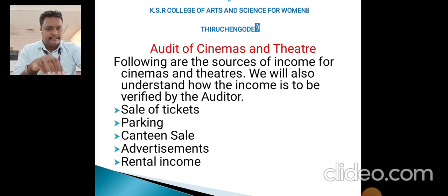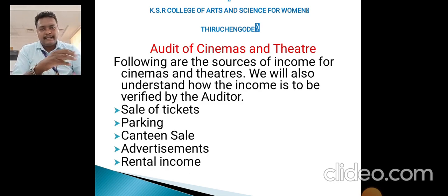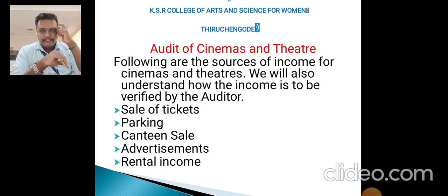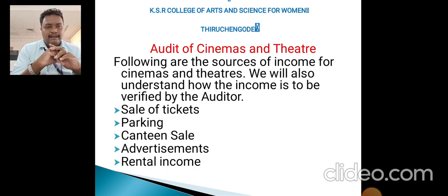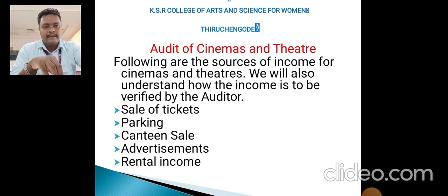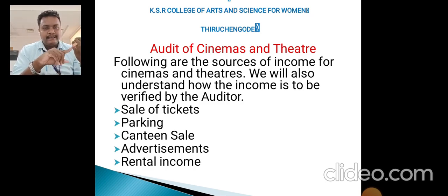The next area is audit in cinema theatres. Cinema theatres also maintain an accountancy process and account systems, so they must also be audited. The sources of income for cinemas and theatres that the auditor needs to verify include: sale of tickets, parking, canteen sales, advertisements, and rental income.